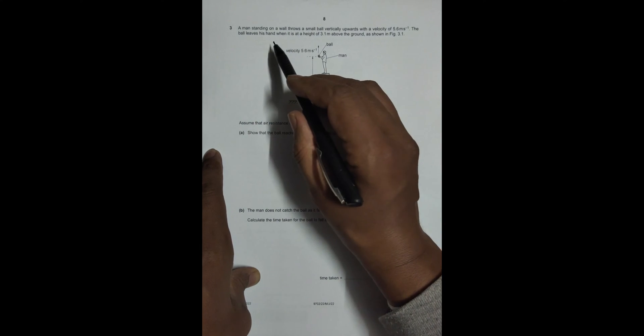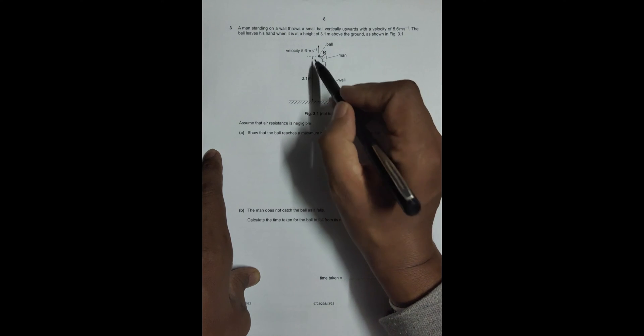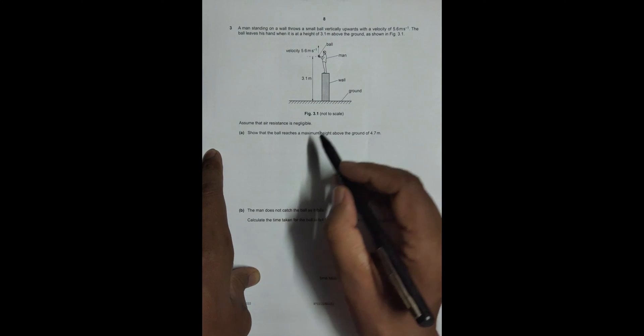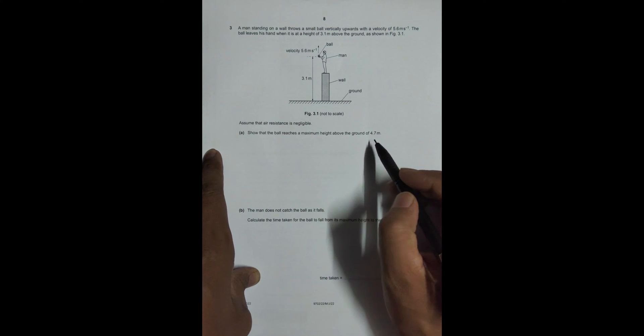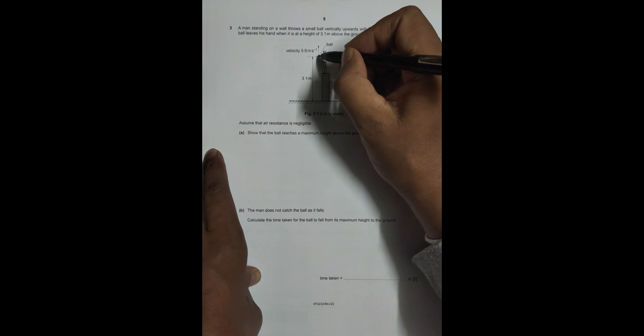The ball leaves his hand when it is at a height of 3.1 meters above the ground, as shown in figure 3.1. Assume that air resistance is negligible, so it's easy for us. The ball reaches a maximum height above the ground of 4.7 meters.